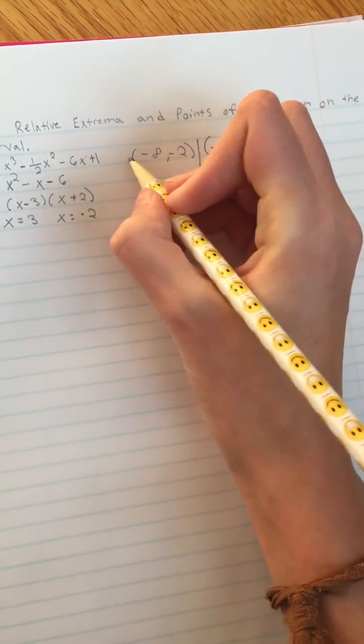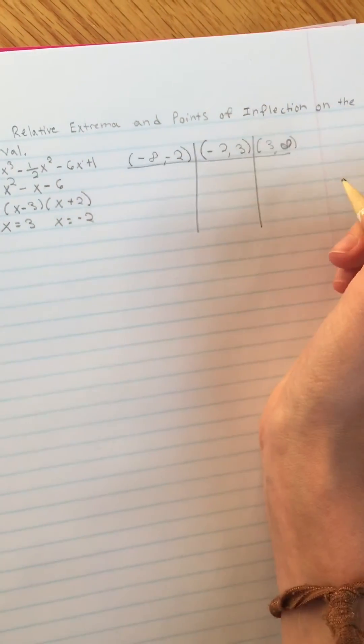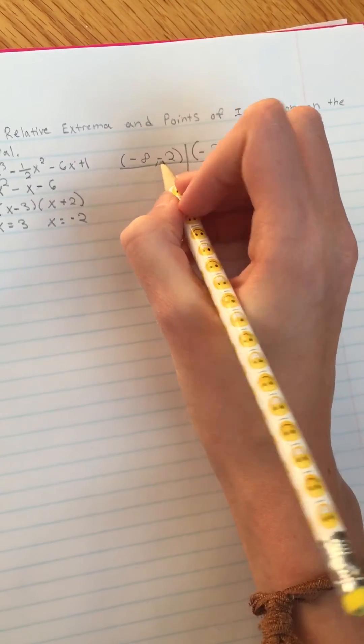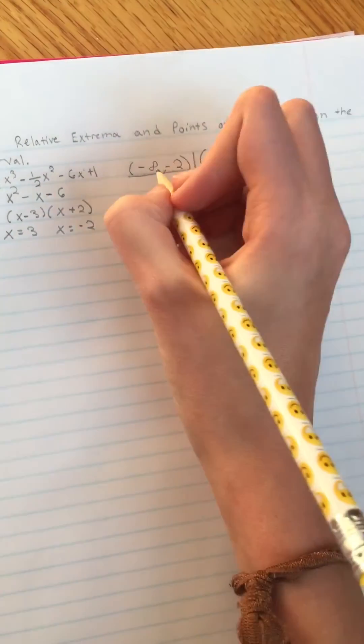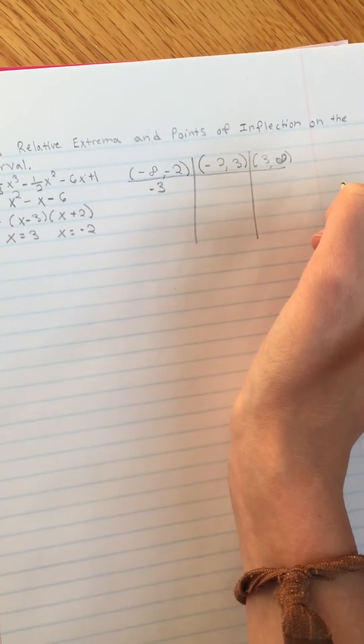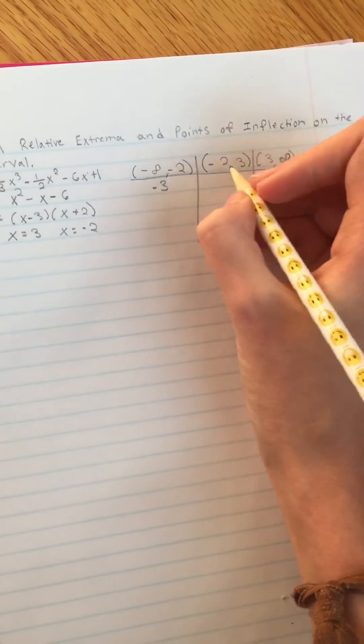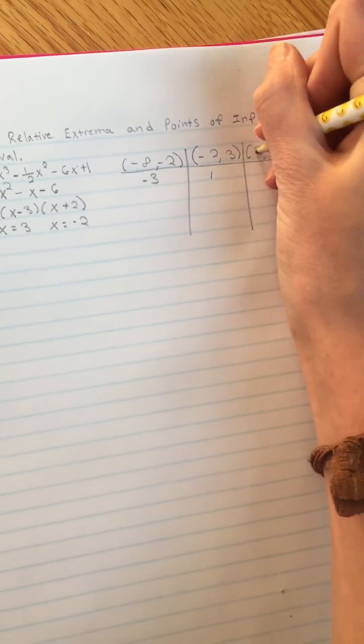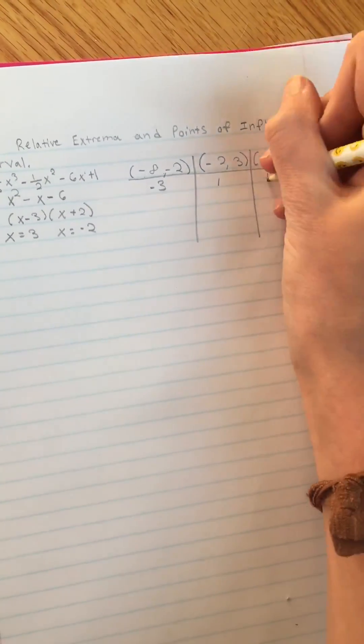And then you're going to make a chart out of it and think what numbers are between negative infinity and negative 2. Let's use negative 3. In between negative 2 and 3, let's use 1, and in between 3 and positive infinity, let's use 4.